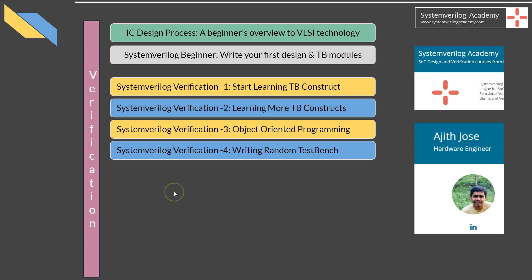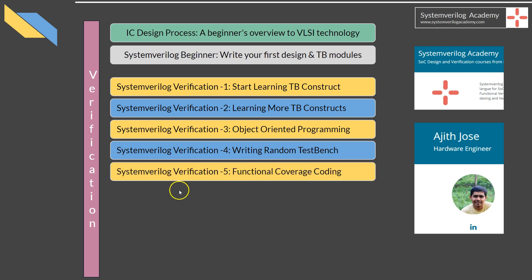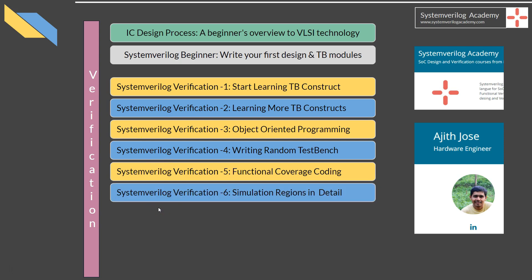The fifth course titled SystemVerilog Verification 5: Functional Coverage Coding teaches all SV features for writing functional coverage items, and it is important to be confident in writing cover groups and cover points for a verification engineer. The next course titled SystemVerilog Verification 6: Simulation Regions in Detail explains how a piece of code will be treated by a simulator in different SystemVerilog time regions, and will give you a clear idea about time regions in SV, which is hard to digest quite often.